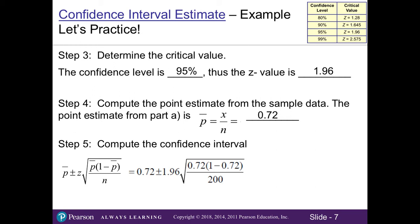So I'm going to solve for the right side over here, my margin of error. And that tells me my confidence interval estimate is 0.72 plus or minus 0.0622. And I'll go ahead and subtract and add my margin of error from my point estimate. And that'll give me a lower limit of 0.6578 and an upper limit of 0.7822.